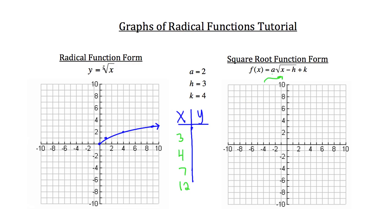Using a equals 2: 2 times the square root of our first x value, which is 3, minus h which is 3, plus k. So 2 times the square root of (3 minus 3), which is 0, plus k which is 4. The square root of 0 is 0, and 2 times 0 is 0, so this simplifies down to 4. That's our first y value.